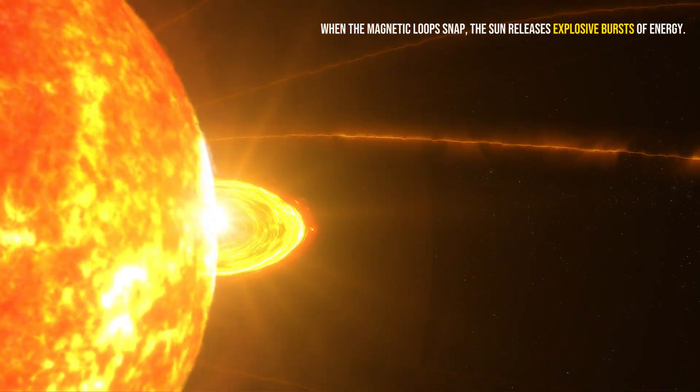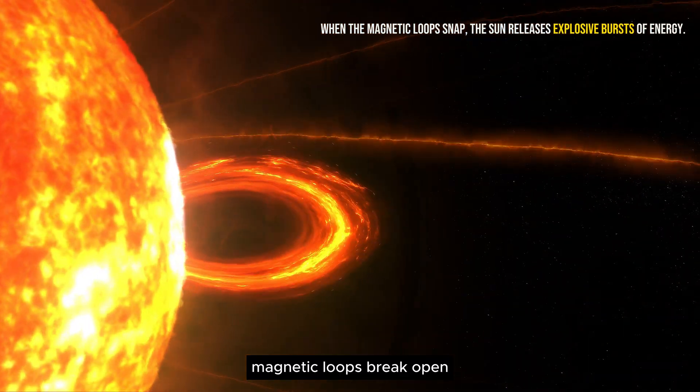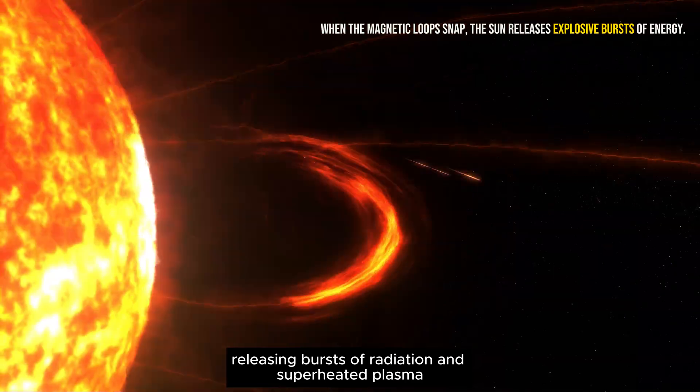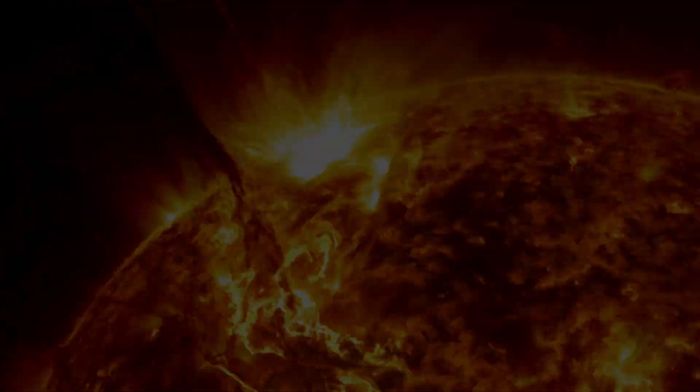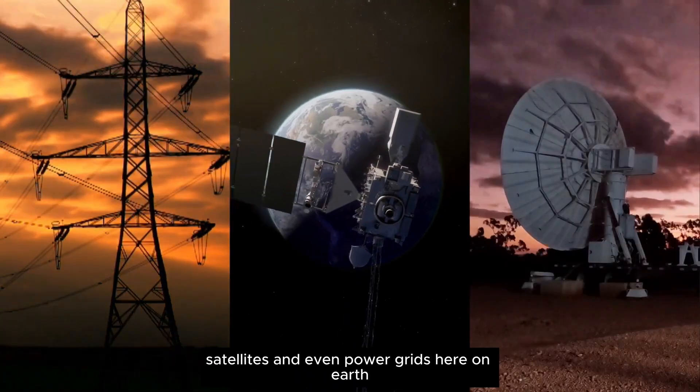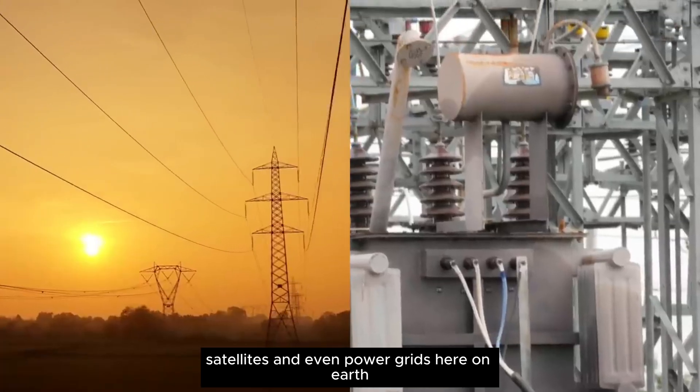That's when the sun snaps. Magnetic loops break open, releasing bursts of radiation and superheated plasma. These explosions are solar flares, and the biggest ones can disrupt radio signals, satellites, and even power grids here on Earth.